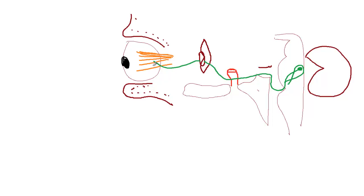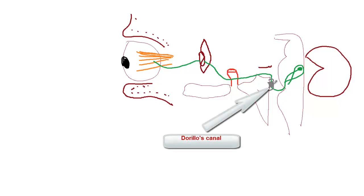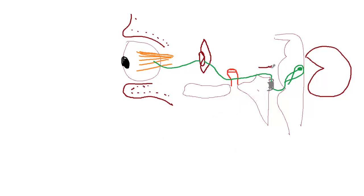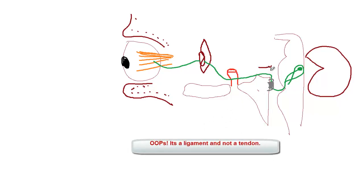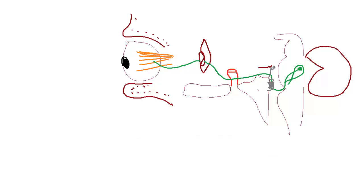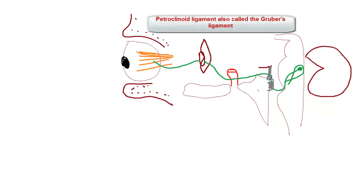Through the common tendinous ring it enters the orbit and supplies the lateral rectus muscle. Now let me draw the ligaments. The Dorello's canal is the sheath of dura mater surrounding the sixth cranial nerve as it climbs the clivus. The petroclinoid ligament — also called the Gruber ligament — connects the petrous temporal bone to the posterior clinoid process.